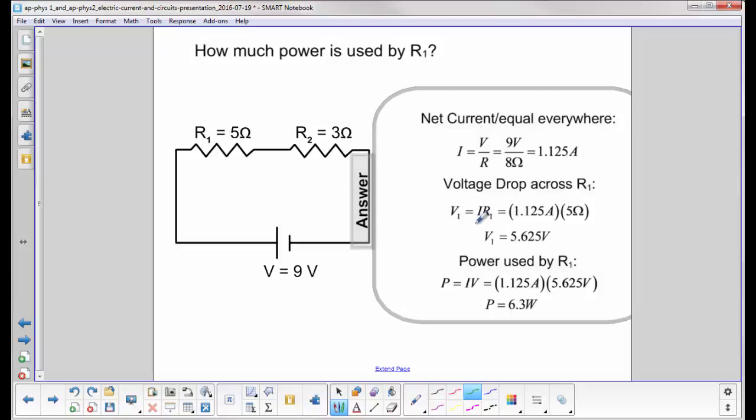We now want to find the voltage drop across R1. And the voltage drop is just I times R1, which is 1.125A times 5 ohms, 5.625V. Notice we're keeping too many sig figs here, because we're going to wait until the end to trim it down.